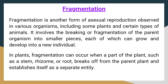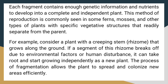Fragmentation is another form of asexual reproduction observed in various organisms, including some plants and certain animals. It involves the breaking or fragmentation of the parent organism into smaller pieces, each of which can grow and develop into a new individual. In plants, fragmentation can occur when a part of the plant, such as a stem, rhizome, or root, breaks off from the parent plant and establishes itself as a separate entity. Each fragment contains enough genetic information and nutrients to develop into a complete and independent plant. This method is commonly seen in some ferns, mosses, and other plants with specific vegetative structures that readily separate from the parent.